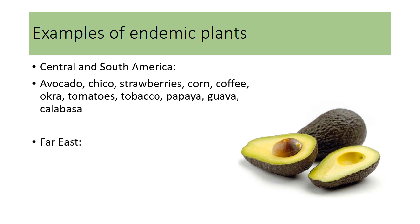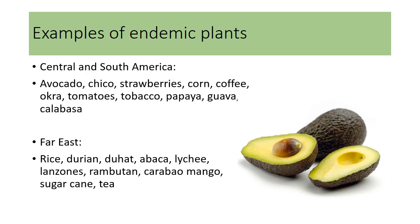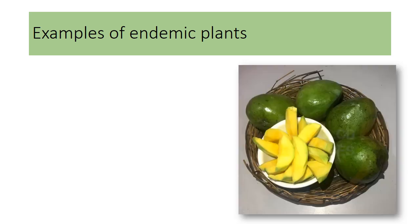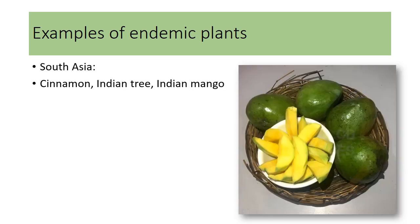In the Far East, we have rice, durian, duhat, abaca, lychee, lanzones, rambutan, caribou, mango, sugarcane, and tea. In Southeast Asia, these are examples of endemic plants.